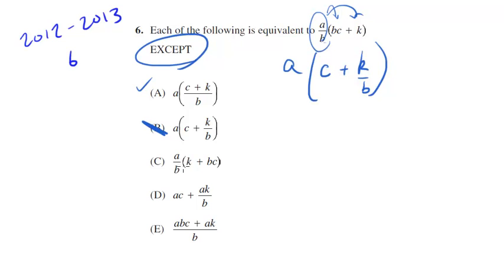How about this: A over B times K plus BC. Well notice they've just taken these two and flipped them, which you can do - no problem flipping the order of addition here. So that's fine, that's the same thing.